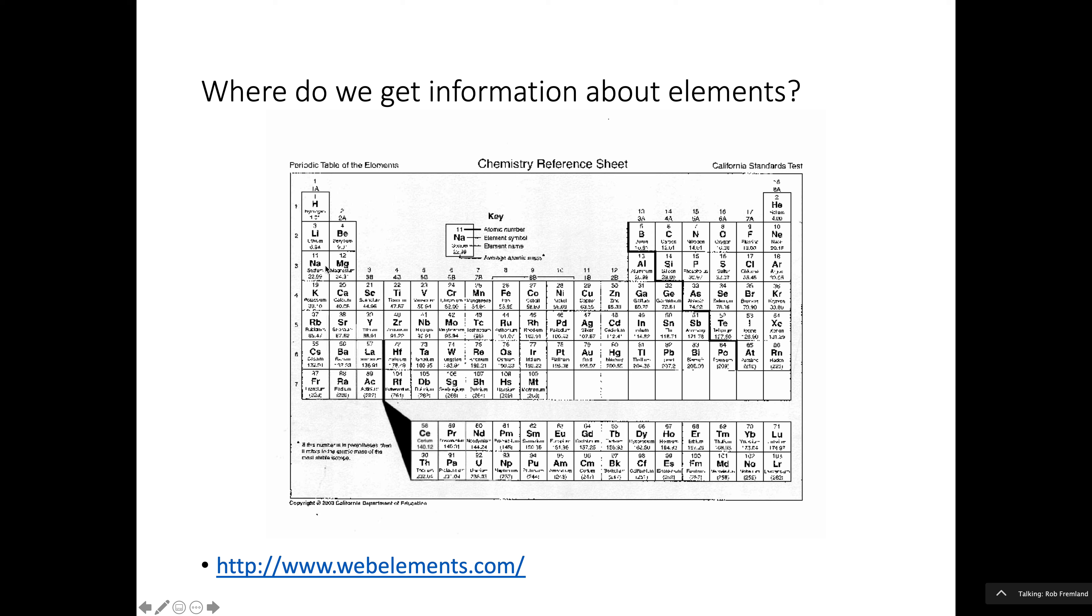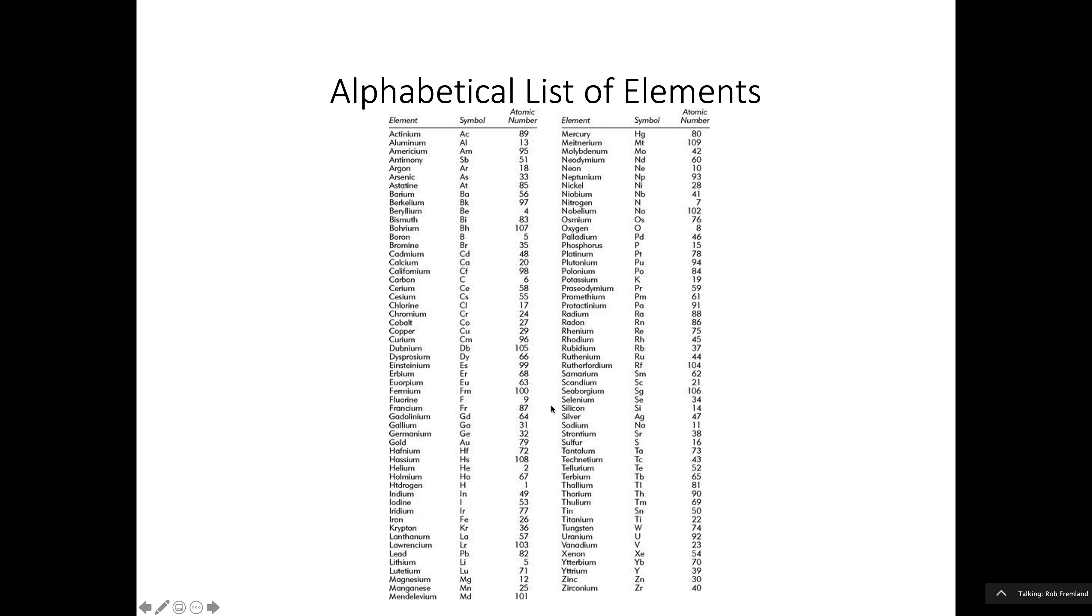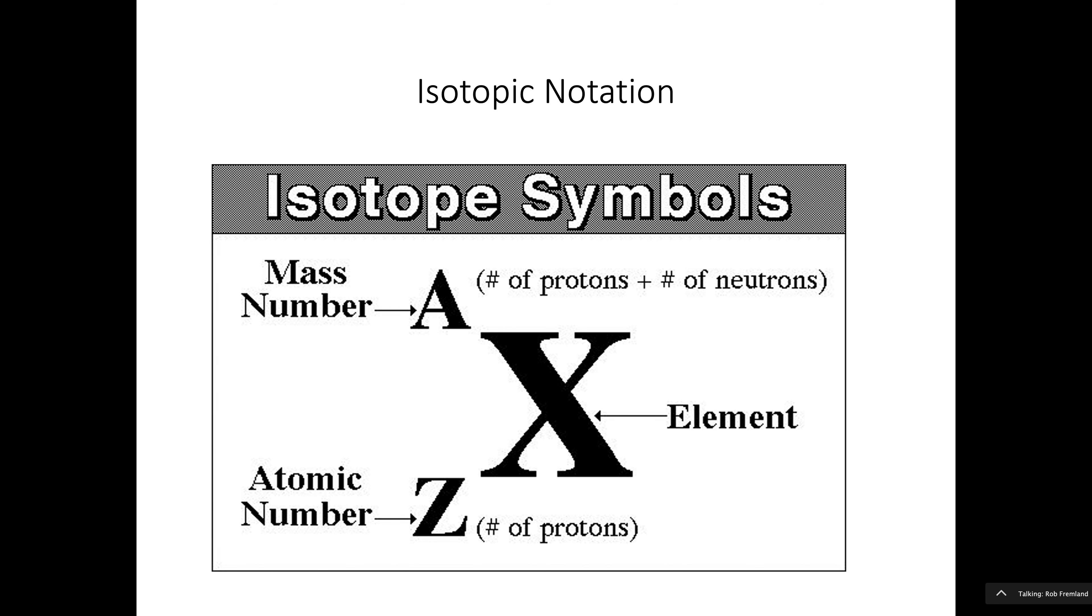But now when I first saw periodic table, I thought, how weird, what a weird way to arrange this. I mean, wouldn't you make it a nice rectangle? What do all these numbers mean? And things like that. And by the way, this is just kind of a fun website. It has a periodic table, and when you click on it, you'll see all sorts of information about the elements. Also, this is an alphabetical list, and that's going to be probably more helpful to you because you guys don't know the symbols yet. But if you want to know the symbol for bismuth, bismuth is Bi. So this is an alphabetical list. It'll be a little bit more helpful.